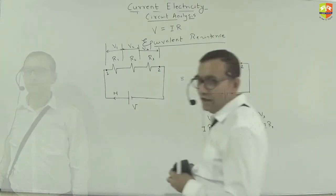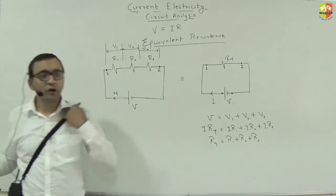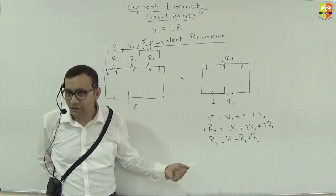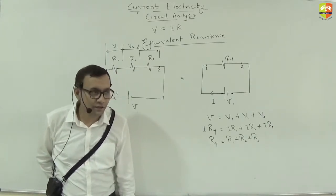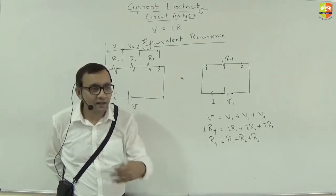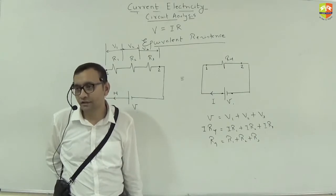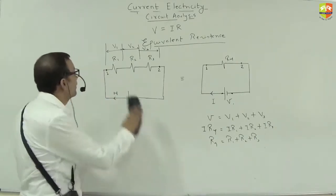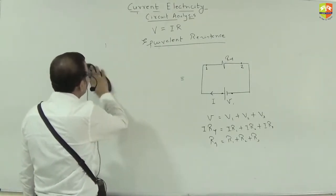So in a series connection, the equivalent resistance is the sum of all the resistances. This means the equivalent resistance is greater than the largest individual resistance when they are connected in series.